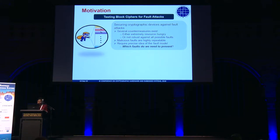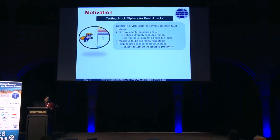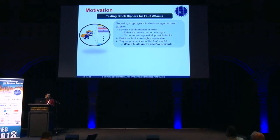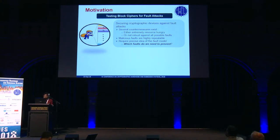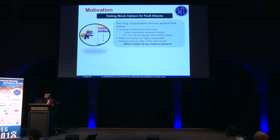Fault attacks are a real concern and we have to prevent them. There exist several countermeasures — some of them are extremely resource hungry, some are not — but many a time they do not provide 100% fault coverage. In practice faults are extremely repeatable, so if you find one fault that can bypass your countermeasure and it's exploitable, your countermeasure is of no use. While designing precise countermeasures, especially for resource-constrained environments, you really need to know which faults you need to prevent against. But the problem is: who is going to tell you?